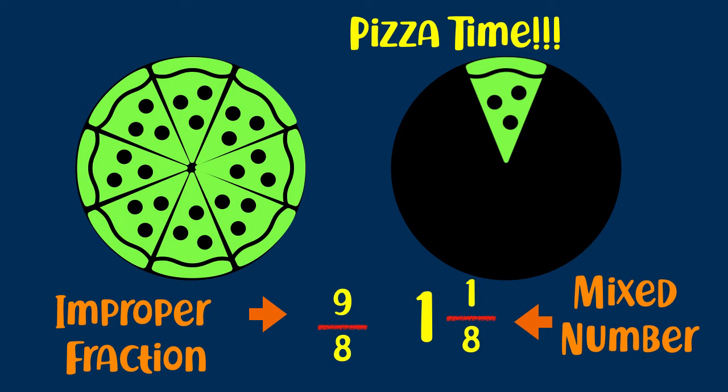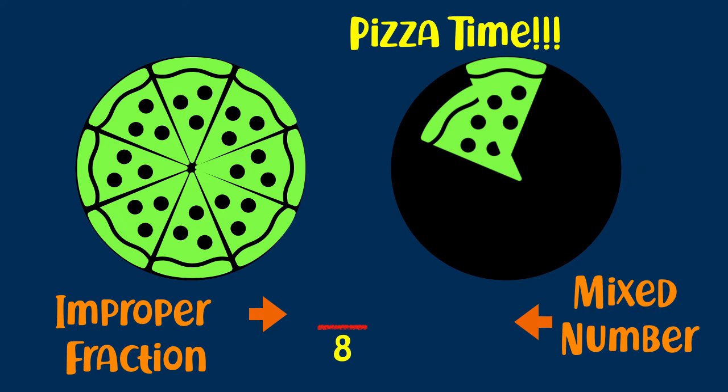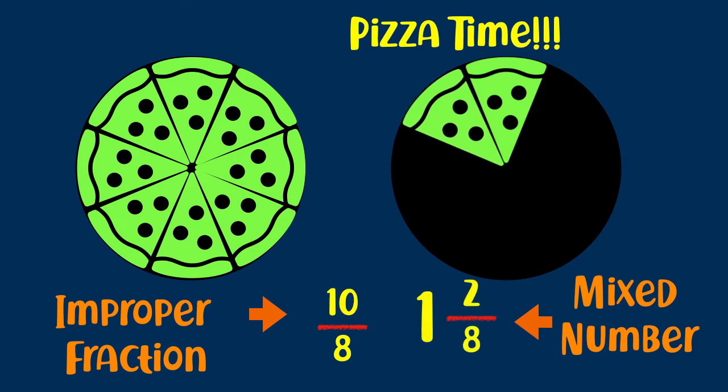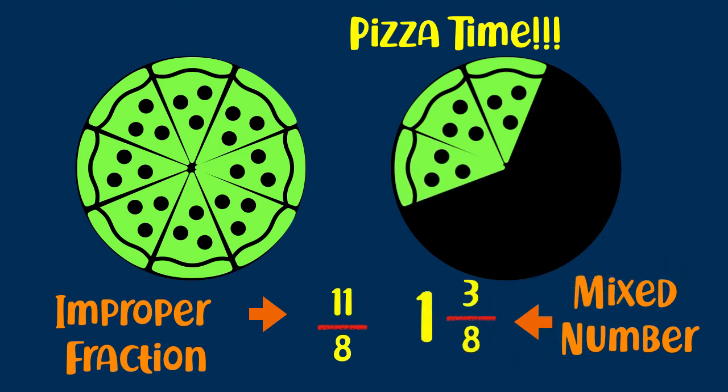So these two guys go together. And you really kind of need to know how to take an improper fraction, turn it into a mixed number, and vice versa. Let's keep going a little bit here. Here comes another piece of pizza. And now I've got 10 eighths or one and two eighths. And here's another piece of pizza. Now I've got 11 eighths total. And if I want to write it as a mixed number, I can do it as one and three eighths.